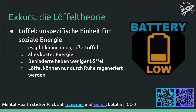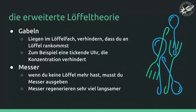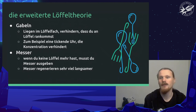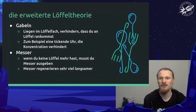I want to do a little excursion about the spoon theory. What is a spoon? A spoon is an unspecific unit for social energy. People with disabilities have on average less spoons than people without disabilities. There's also the expanded spoon theory, which includes forks and knives. Spoons are basically a unit of energy, and people have different amounts of spoons. Depending on what your disability is, some tasks require more effort.